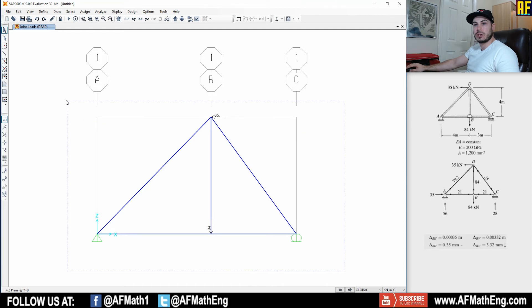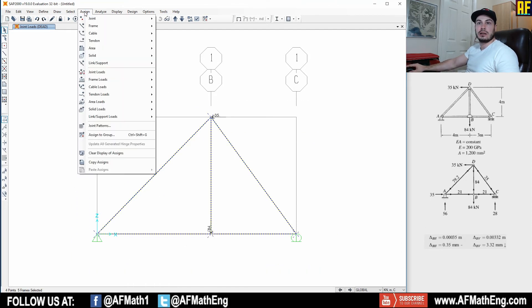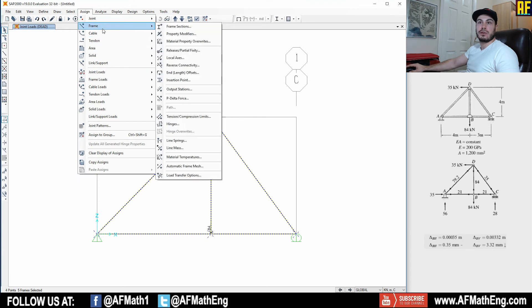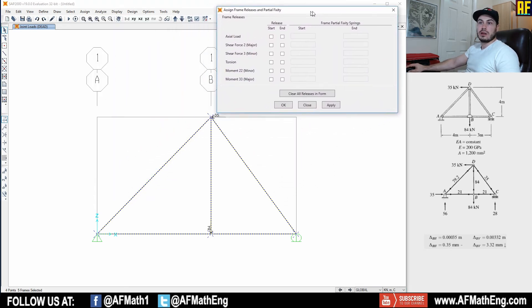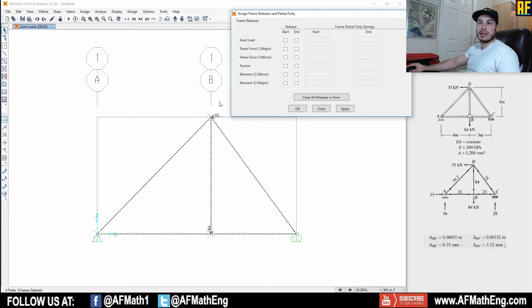And how we're going to do that is we're going to go here and we're going to select our entire structure. We're going to go to assign. We're going to go to frame. And we're going to go to release slash partial fixity, double click on that. And what that's going to do is that's going to allow us to select the start and the end of each member and release them against moment. So essentially we're going to release the restraints against moment here. And as you can see, we've had zero moment on the ends of all of these, which essentially means that it's pinned on the ends. And we're going to press okay.